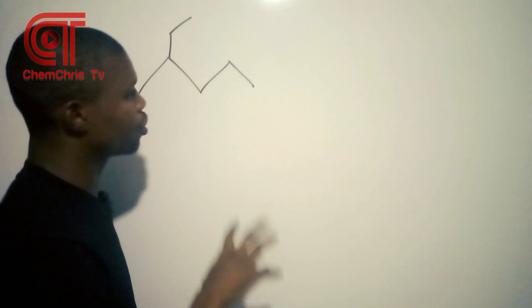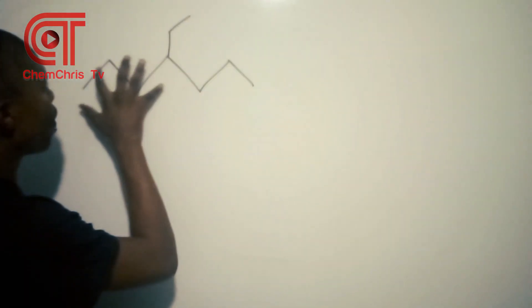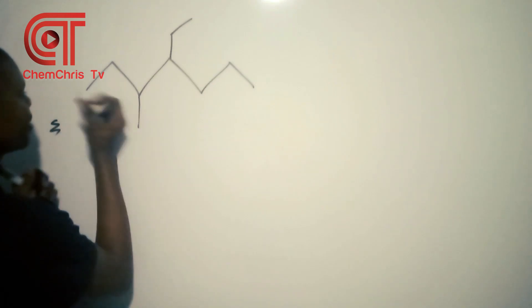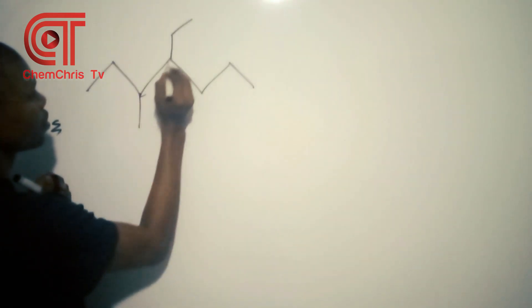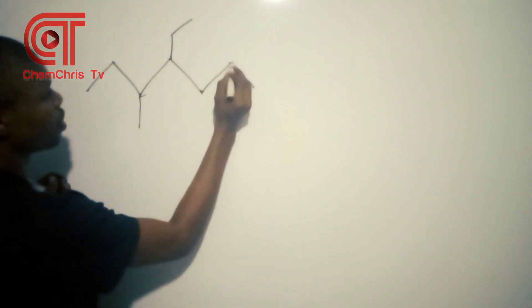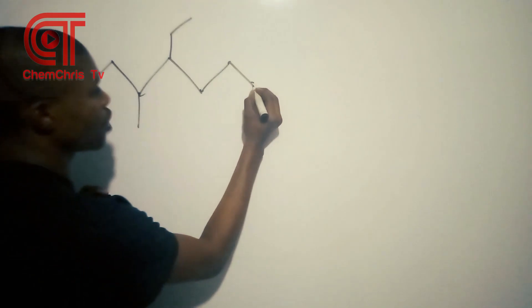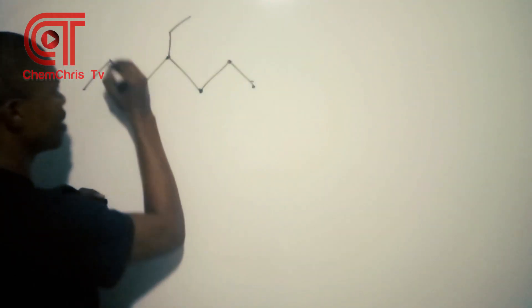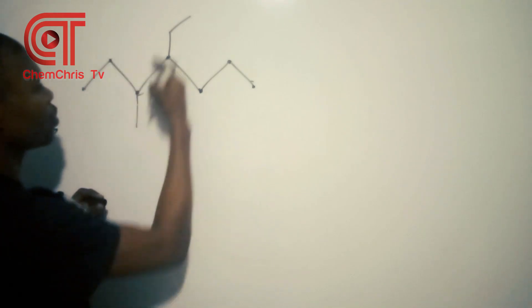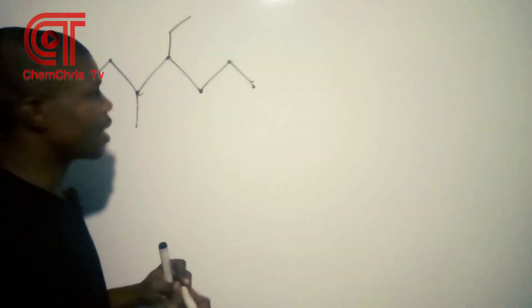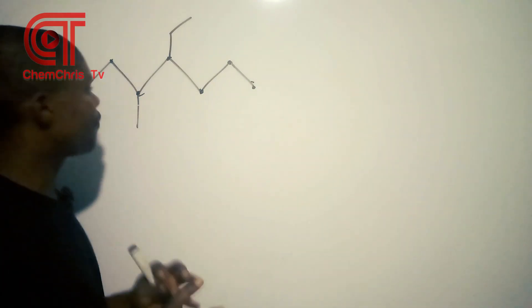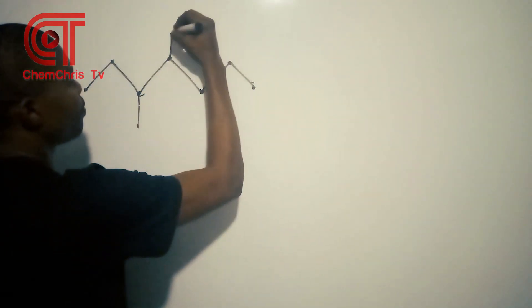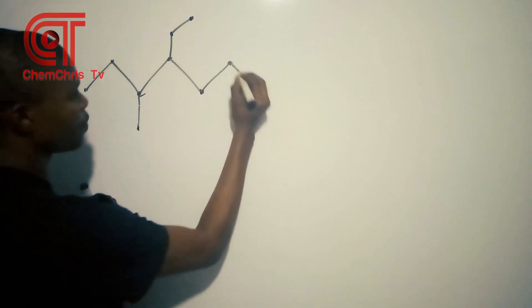This structure you see is called a skeletal structure. A skeletal structure is used when you don't want to stress yourself writing everything out. Each point in the skeletal structure represents a carbon atom.